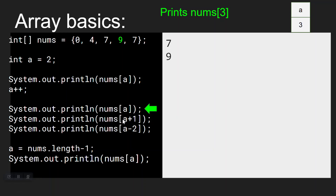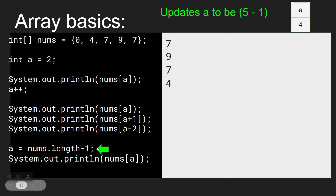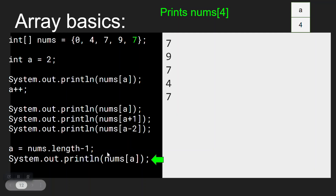Next, we're going to print nums at A plus 1. If the current value of A is 3, then A plus 1 takes us to index 4, which is the number 7. Then it says print nums at A minus 2. A is 3, so subtracting 2 gives us nums at index 1 — that's the number 4. Finally, we reassign A to nums.length minus 1. The length of nums is 5, so 5 minus 1 is 4. Now A is 4, and we're printing nums at index 4, which is that 7 again. That gives us the full output of 79747.